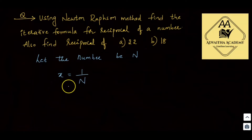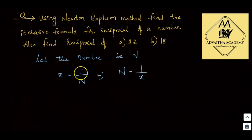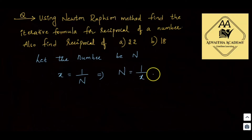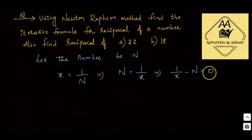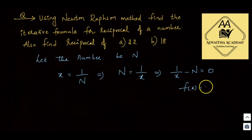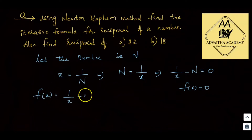So, x is equal to 1 by n. We can also write n is equal to 1 by x. Bringing n to the left-hand side, we get 1 by x minus n is equal to 0. So if f(x) = 0, then f(x) is equal to 1 by x minus n.